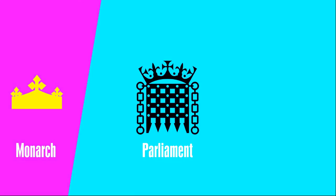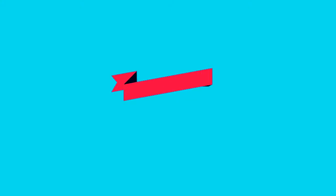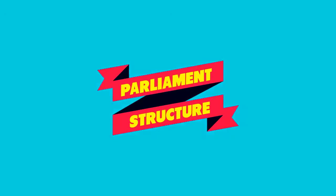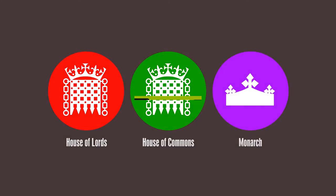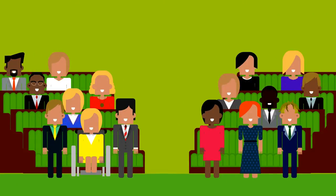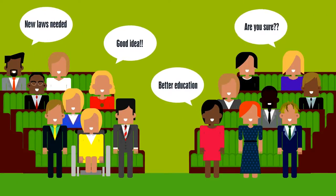Let's take a closer look at the UK Parliament today. Parliament is made up of three parts: the House of Commons, the House of Lords, and the Monarch. The House of Commons is the elected chamber of Parliament. It debates big issues, proposes laws, amends existing ones, and challenges the government's work. There are 650 Members of Parliament, or MPs, who each represent a constituency in the UK.